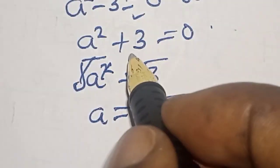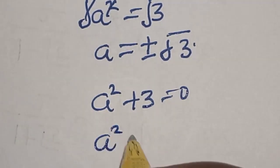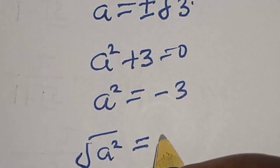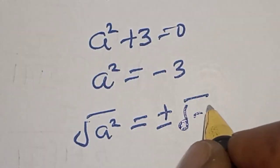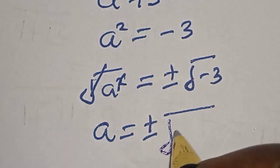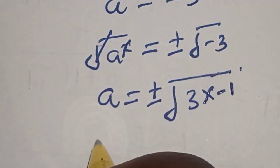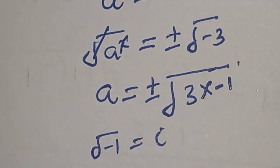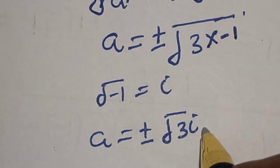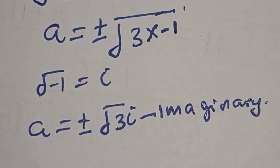For the second case, a squared plus 3 is equal to 0, so a squared is equal to minus 3. Let's take the square root of both sides: a is equal to plus or minus square root of minus 3, which equals plus or minus square root of 3 times square root of minus 1. Remember that square root of minus 1 is equal to i, so this result is imaginary and it is rejected.